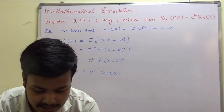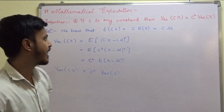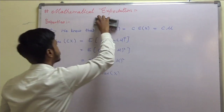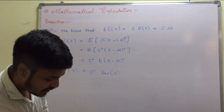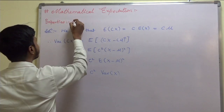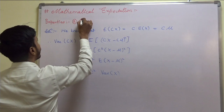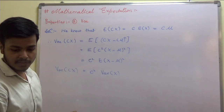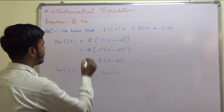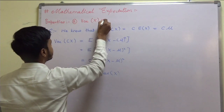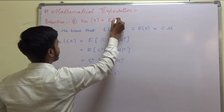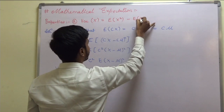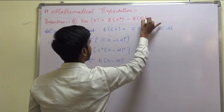Now let us take the second property that we have to prove. The second property of variance states that variance of X is equal to expectation of X squared minus expectation of X whole square.